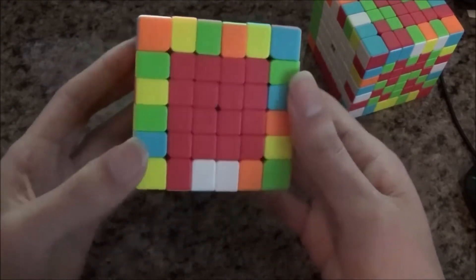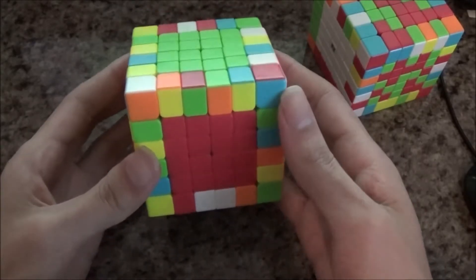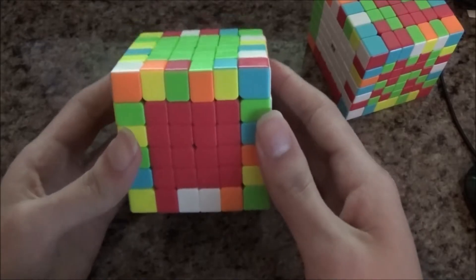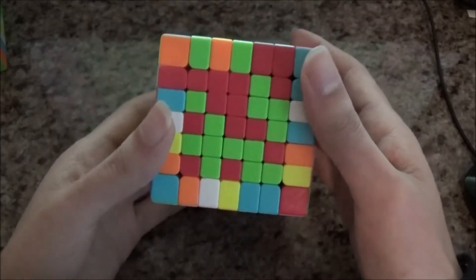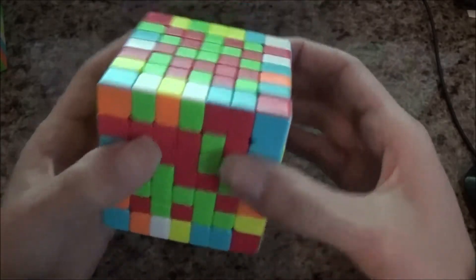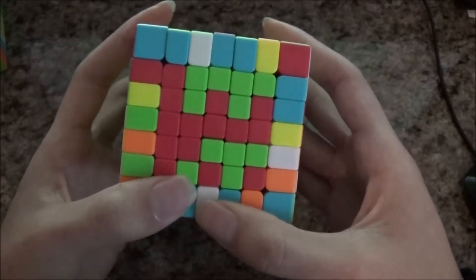I think that everyone who wants to speed solve big cubes should solve their last two centers just like this. Now, let's do it in a 7x7 perspective. Here, I see this, so this could be my first strip. And the way to make this strip here is to make a 3x3x1 from here.